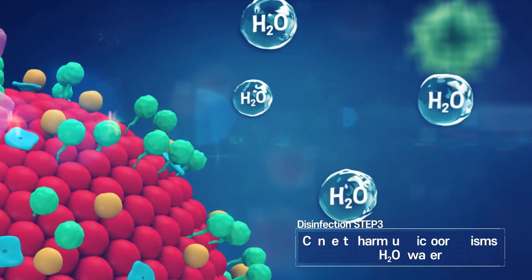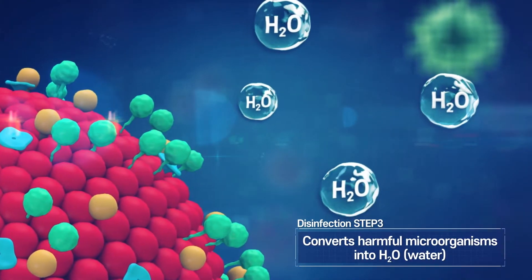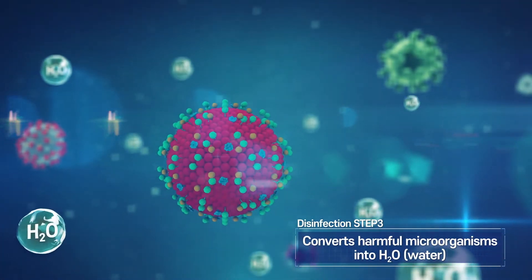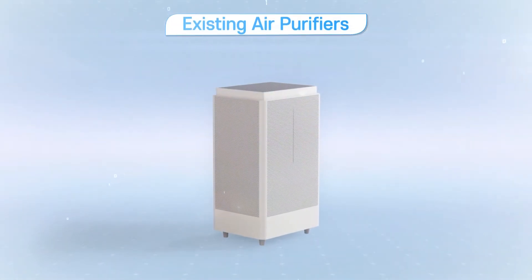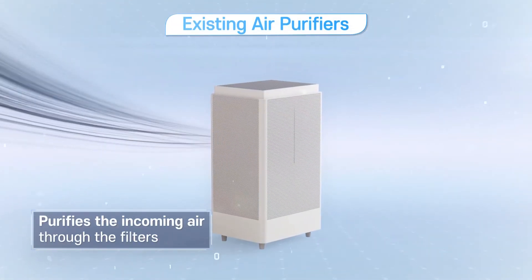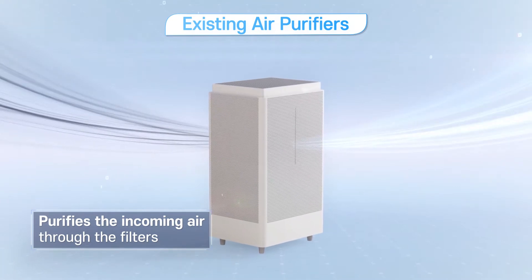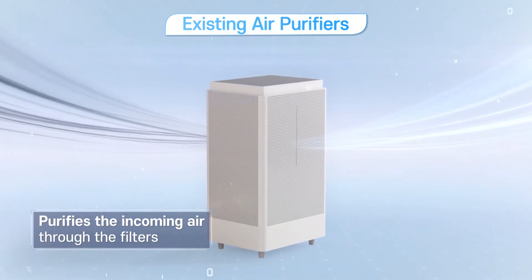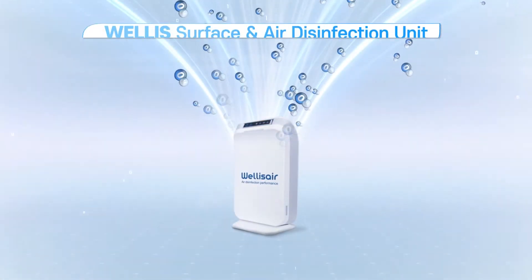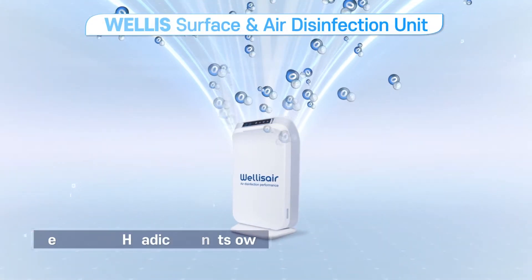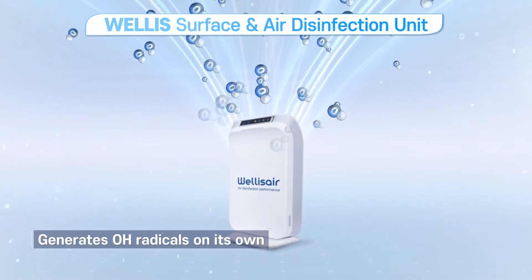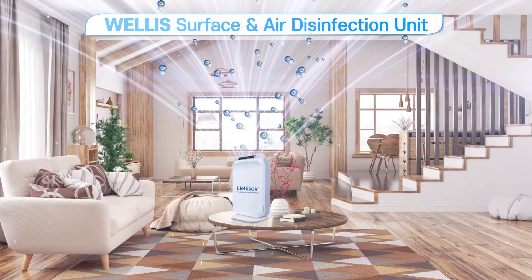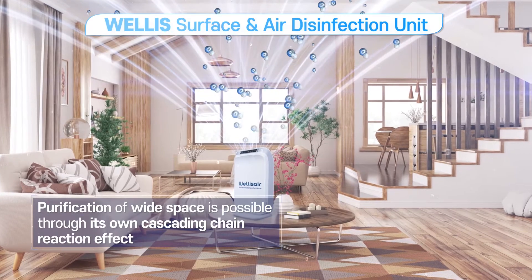It then converts them into H2O molecules that are harmless to the human body. Traditional filter-based air purifiers take in contaminated indoor air, remove the dust through the filters, and then release it out again. Welles Air Disinfection Unit generates its own OH radicals and releases them, so excellent air purification is possible even for large areas compared to existing air purifiers.